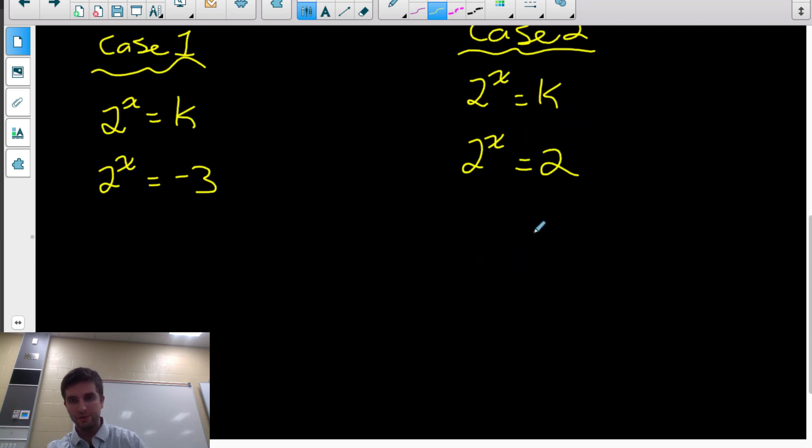So this equation, let's start with this one over here. If I wanted to solve this equation, I mean, the solution is obvious to this one. 2 to what power equals 2? Well, 2 to the 1 equals 2. So the answer is 1 for this.